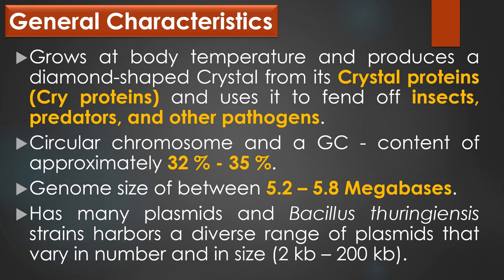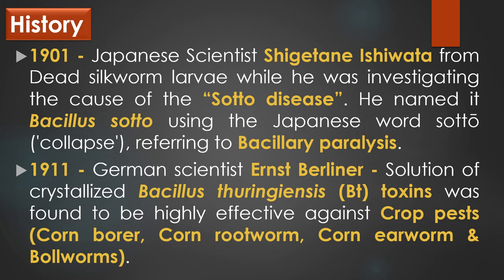History of Bacillus thuringiensis: Bacillus thuringiensis was first discovered in 1901 by a Japanese scientist Ishiwata from dead silkworm larvae while he was investigating the cause of the Sotto disease or sudden collapse disease. He named it Bacillus Sotto, using the Japanese word Sotto, which represents collapse and referring to bacillary paralysis. In 1911, it was rediscovered by a German scientist Ernst Berliner, and a solution of crystallized Bacillus thuringiensis toxins was found to be highly effective against certain crop pests which include the corn borer, corn rootworm, corn earworm and bollworms.